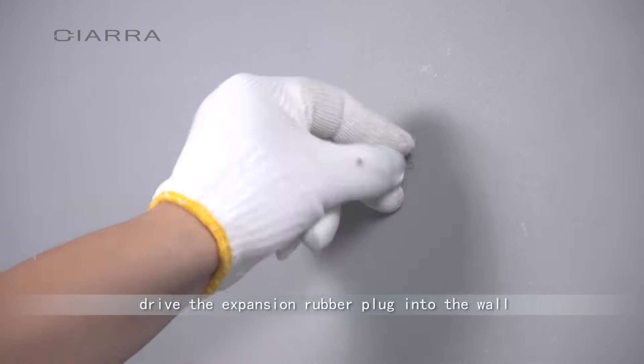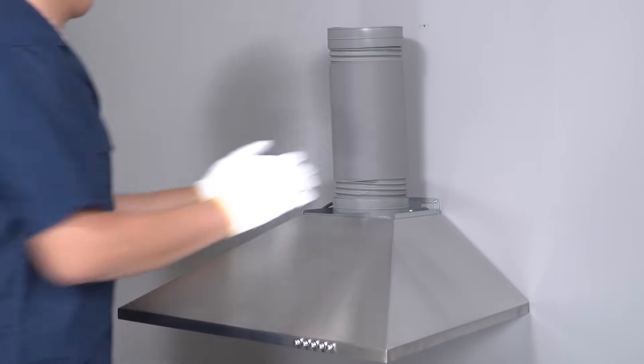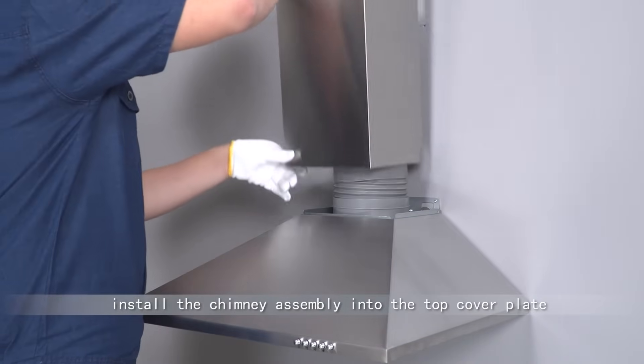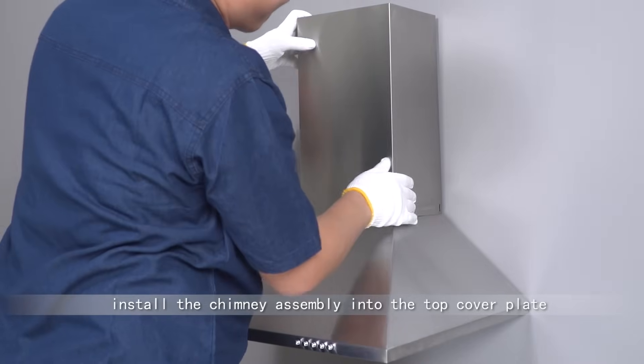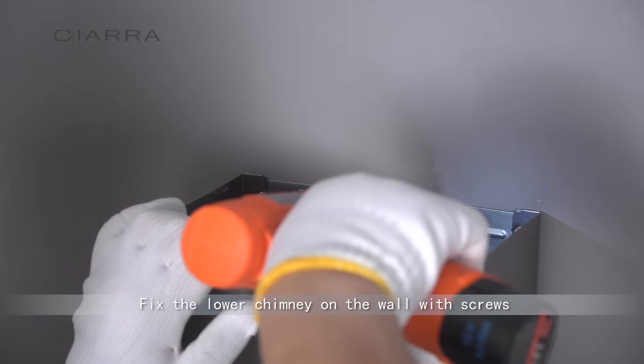Drive the expansion rubber plug into the wall. Insert the air duct into the air outlet. Install the chimney assembly into the top cover plate. Fix the lower chimney on the wall with screws.